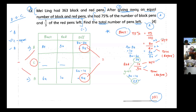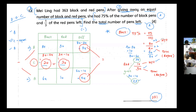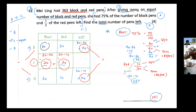Given away: 8 units minus 6 units equals 2 units. Check red: 3 units minus 1 unit equals 2 units — same. She had 363 total pens at first, meaning black and red together: 8 units plus 3 units equals 11 units.